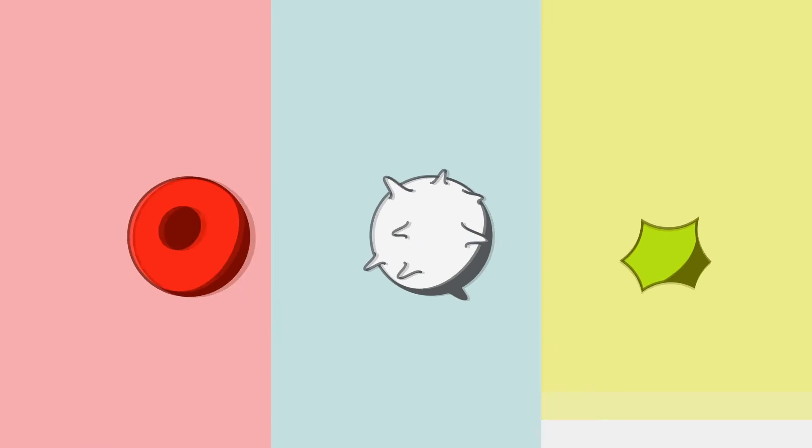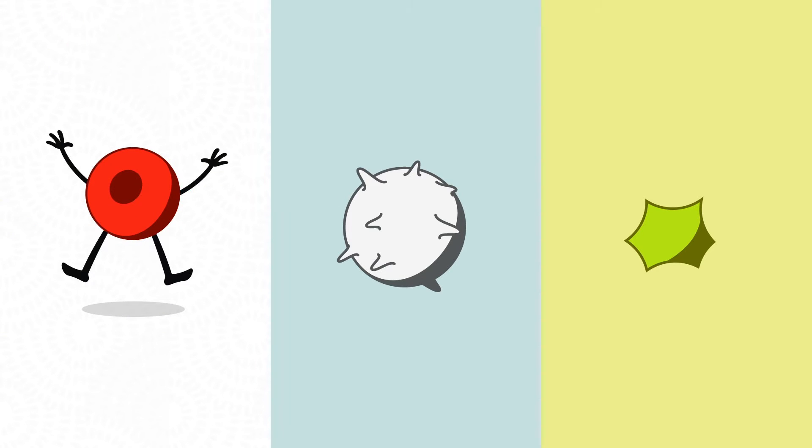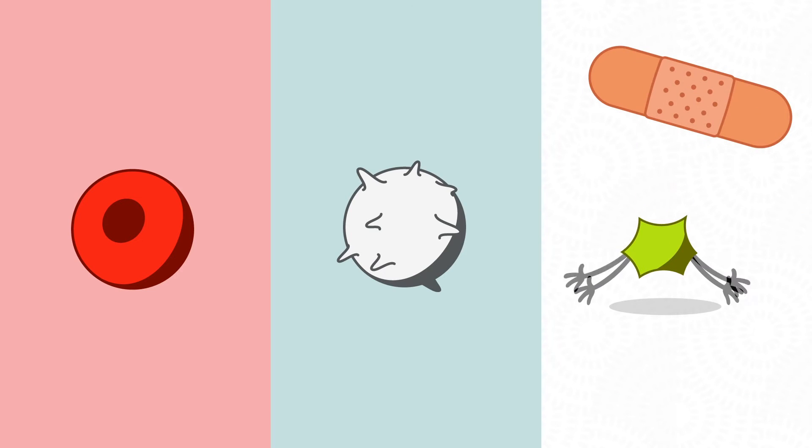Each cell has a different job to do. Red blood cells give energy to your body. White blood cells fight off disease. And platelets help your body stop bleeding if you get a cut.